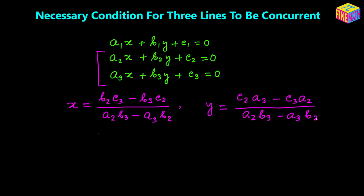Solving the second and third equations, we get the values of x and y. Now if the first equation also has to intersect these other two lines at the same point, then the coordinates of that intersection point of the second and third lines must satisfy the first equation. So if we use those values of x and y in the first equation, what do we get?